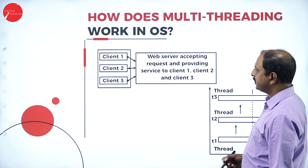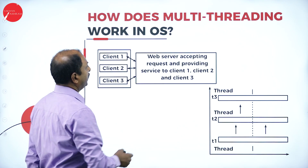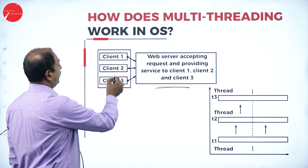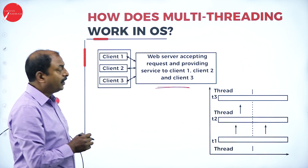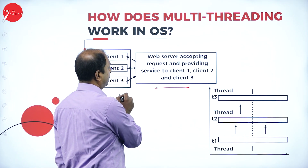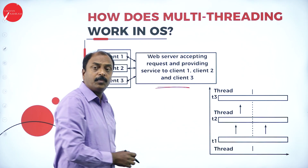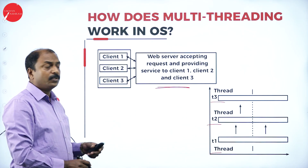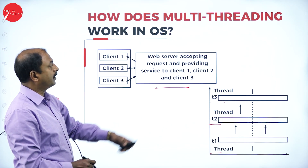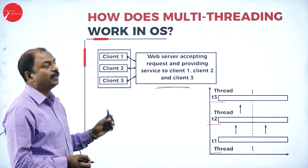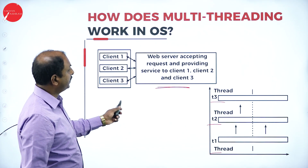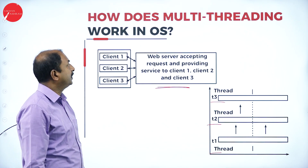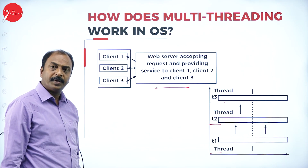Here is an example: a web server application. There are three clients — client one, client two, client three — and all three different clients are users accessing the server. The server creates three different threads for three different users. This is an example of a multi-threading operating system where three threads are created for one process serving three users.